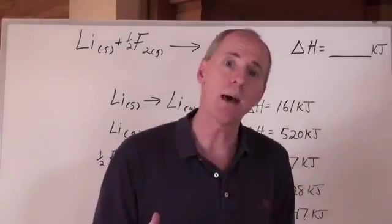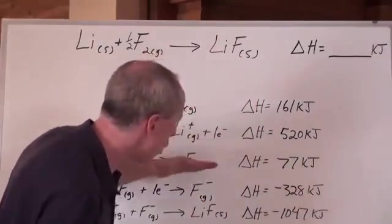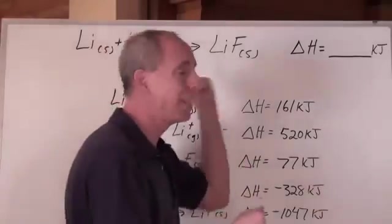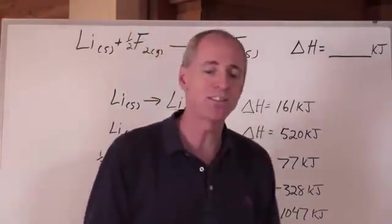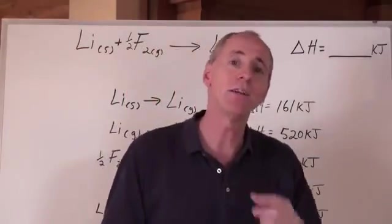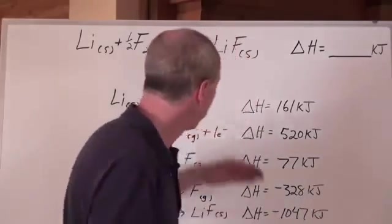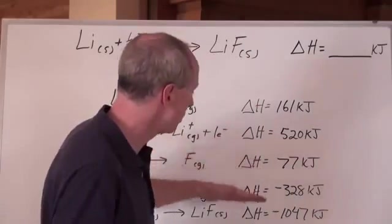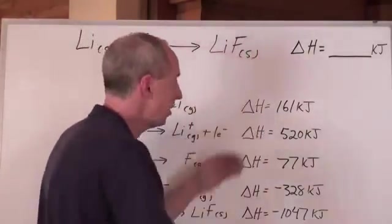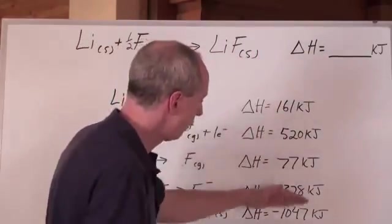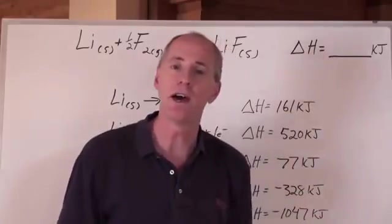That's the first step. There are a bunch of steps we have to go through here. Hess's law of additivity, covered in the energetics unit, tells us that we can take all of these equations, and if they add up to make a net equation, we can add all their heats to come up with the net heat for that equation.